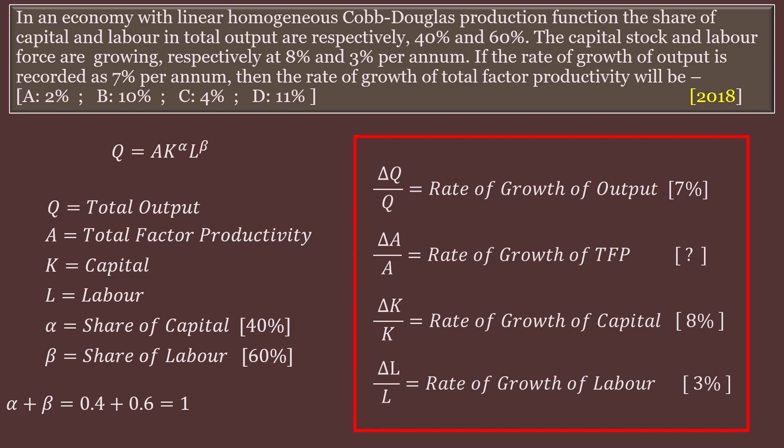Now to solve this problem, we must know the values of the rate of growth of output — that is delta Q by Q, which is given as 7%. Delta A by A is the rate of growth of total factor productivity, which we have to calculate. Delta K by K, the rate of growth of capital, is 8%, and delta L by L, the rate of growth of labour, is 3% — both given in the problem. However, delta Q by Q, delta A by A, delta K by K, and delta L by L are not explicitly present in the Cobb-Douglas production function. If we successfully derive these terms, we can easily substitute them and find the answer.